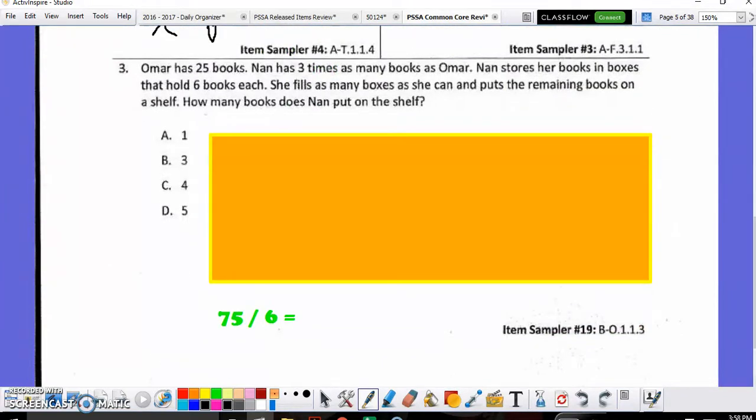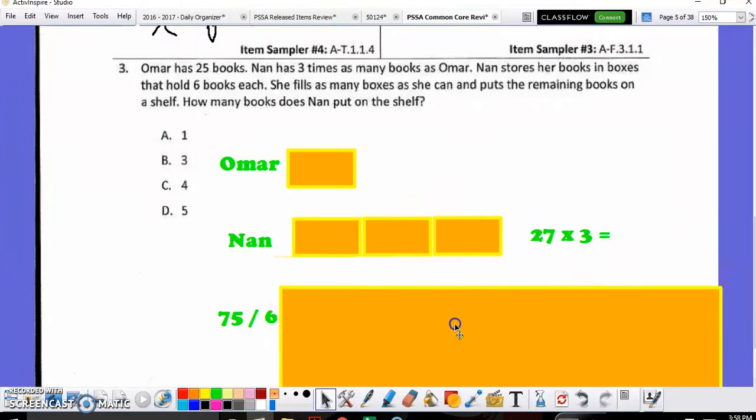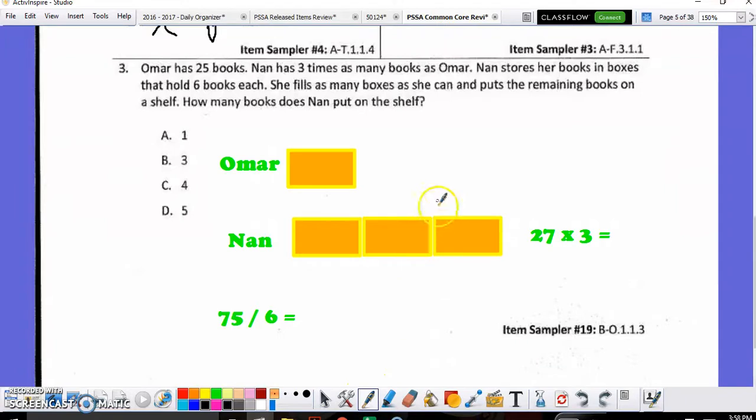Question three. Omar has twenty-five books. Nan has three times as many as Omar. Nan stores her books in boxes that hold six books each. She fills as many boxes as she can and puts the remaining books on a shelf. How many books does Nan put on the shelf? So, we're looking for the remainder to seventy-five divided by six. Here's how I came up with that. My K, or what I know, is all outlined here in this chart. My W is how many books were left over. And solving eventually gets me to seventy-five divided by six.